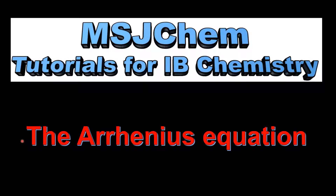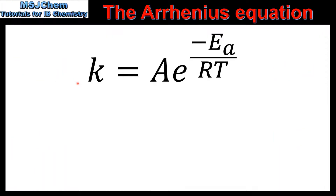This is MSJChem. In this video I'll be looking at the Arrhenius equation, which can be found in section 1 of the data booklet. The equation is K equals A multiplied by E raised to the power of negative Ea over RT.